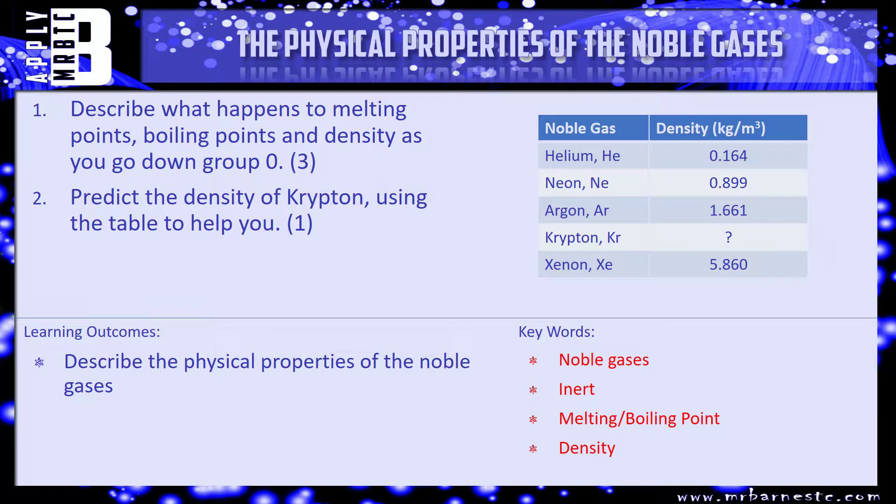Question one is worth three marks so you need to just simply describe the trend for melting point, boiling point and density for three marks. And question two is worth one mark. Have a go at it. Pause the video, we'll see how you've done in a minute.